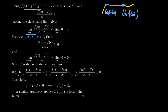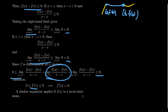The right-hand limit of the difference quotient is ≤ 0, and the left-hand limit is ≥ 0. Since the derivative f′(c) exists, the two-sided limit must satisfy both conditions simultaneously — it must be less than or equal to zero and greater than or equal to zero. The only number satisfying both is zero itself. Therefore f′(c) = 0, proving that the derivative at an extreme value, if it exists, must equal zero — there must be a horizontal tangent line.